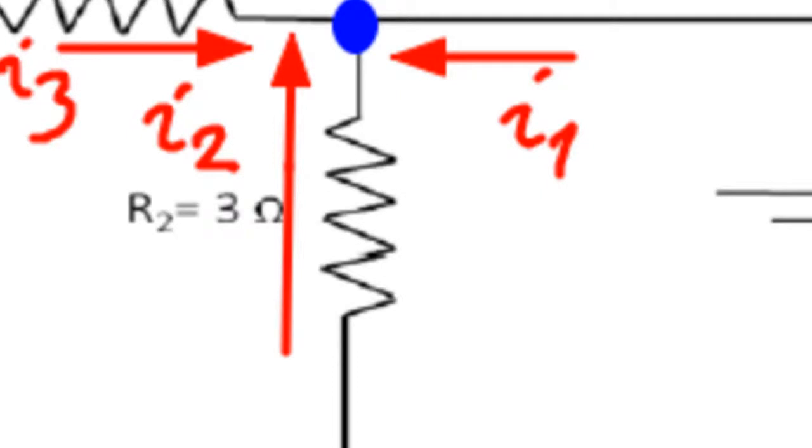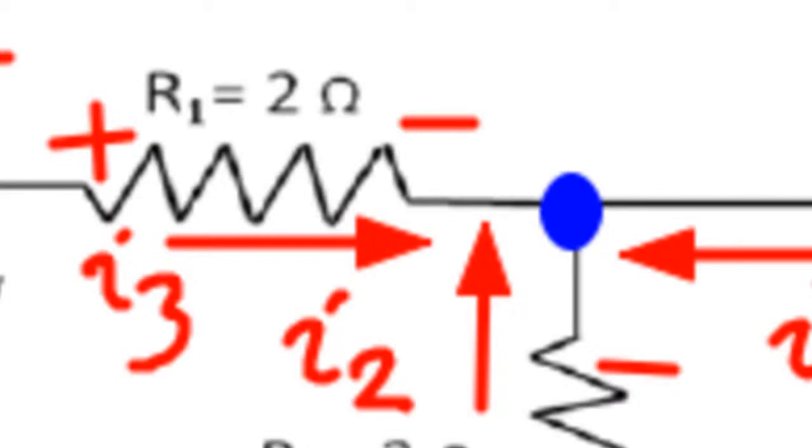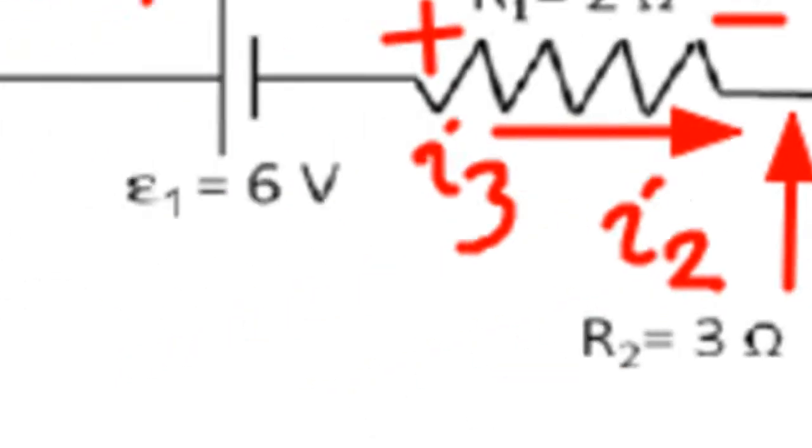For resistor R2, which is 3 ohms, the current is I2. By the same logic, the plus sign goes on the entry side and the negative sign on the exit side. For resistor R1, which is 2 ohms, the current is I3 flowing to the right, so the signs are placed accordingly. Finally, for resistor R4, which is 4 ohms, the current is I3, so the signs are placed as follows.